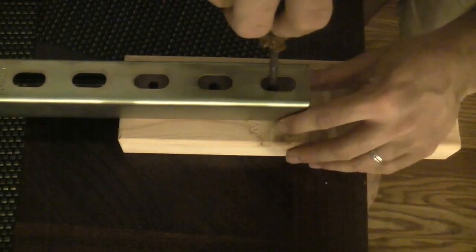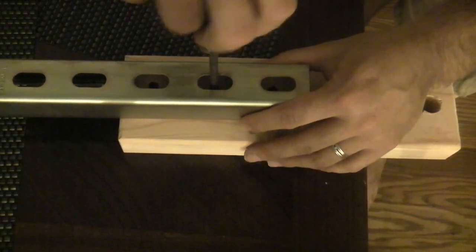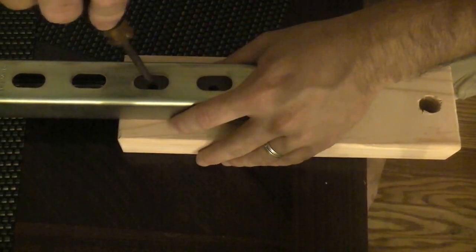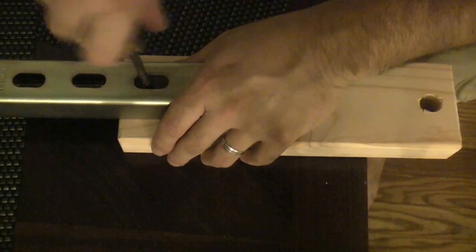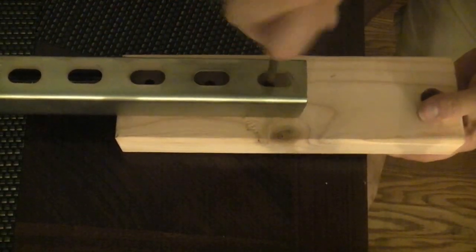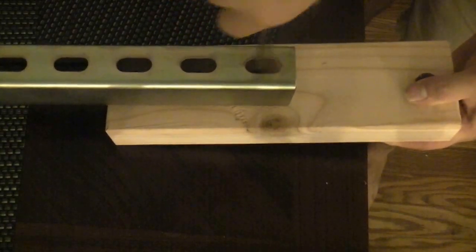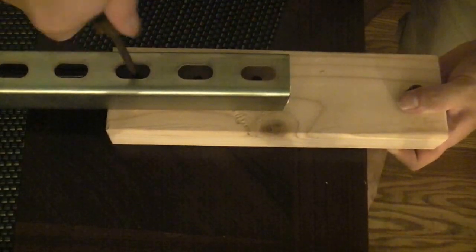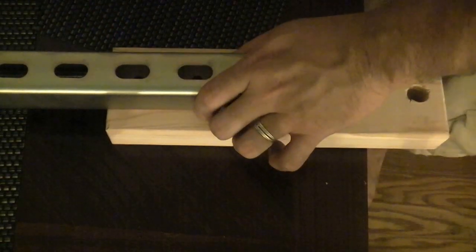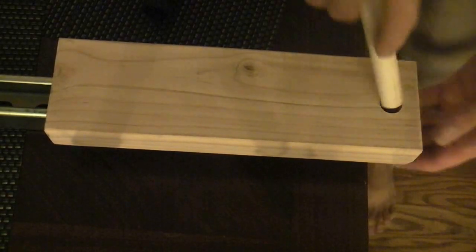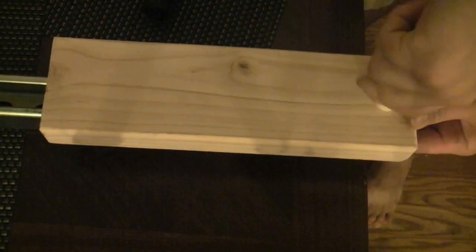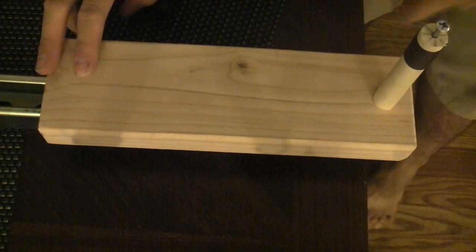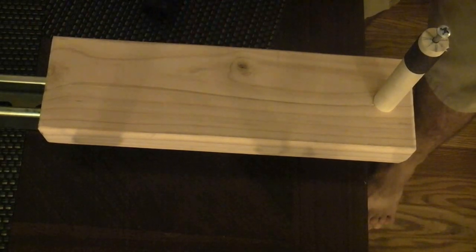Once you've got it where you want it to be, you just want to tighten these screws. And there it is. As a final bit, you want to take one of these arms and place it in. So, here's the finished end piece.